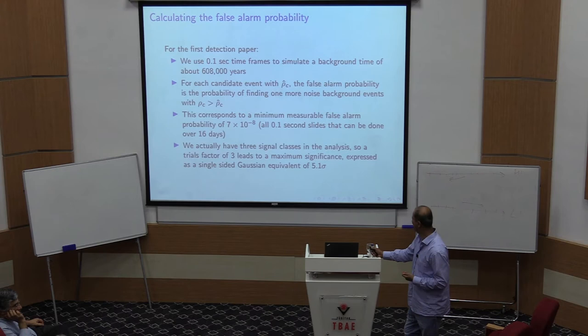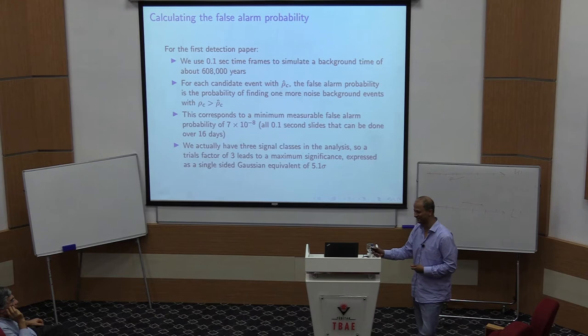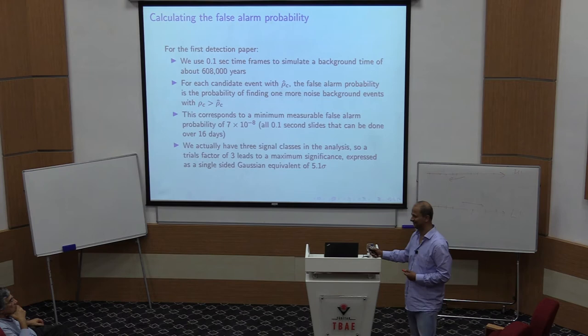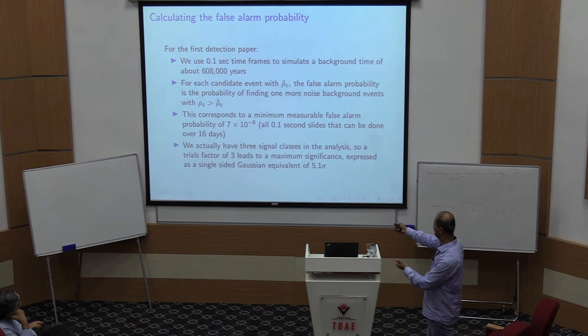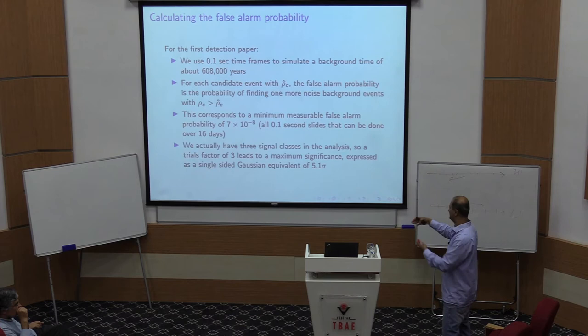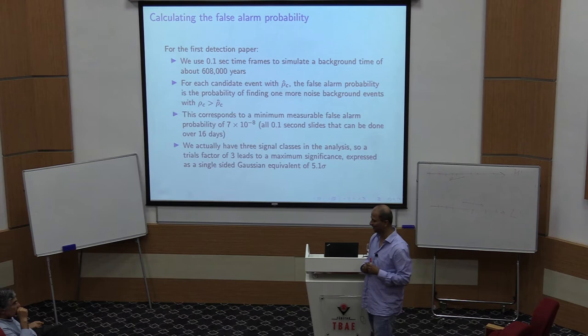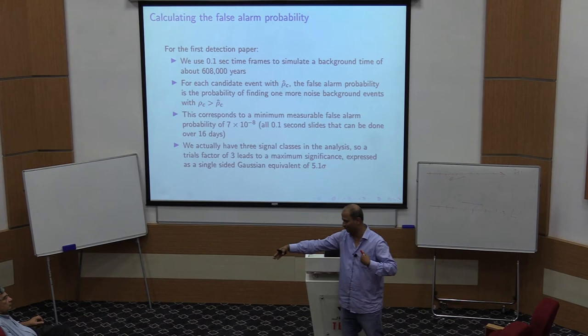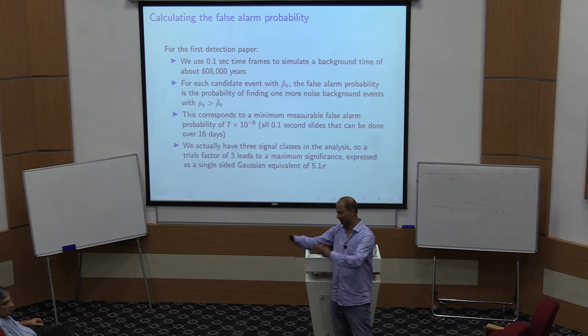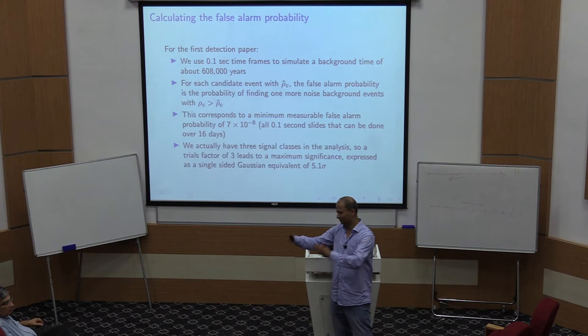We were told 5 sigma is the gold standard. Most events will be right at threshold — you hope for a 38 sigma event but most will be marginal. The goal was to publish as soon as possible: what is the smallest amount of data needed to reach 5 sigma? The calculation showed we need 16 days of data, fixing the 5 sigma threshold, which then required the 600,000 year effective background.